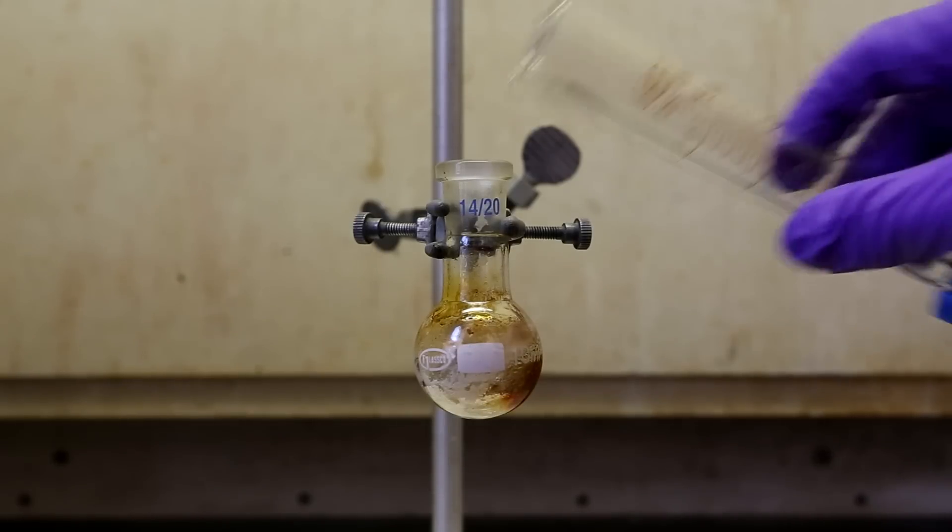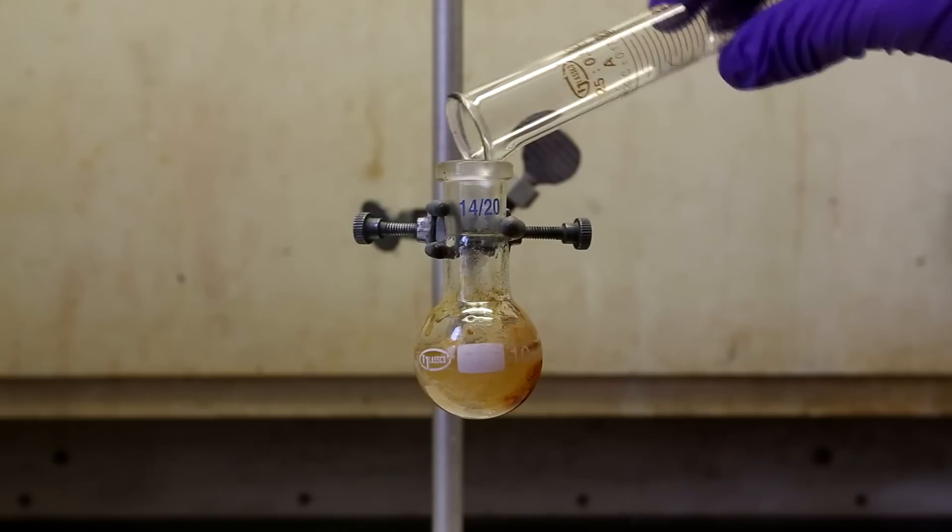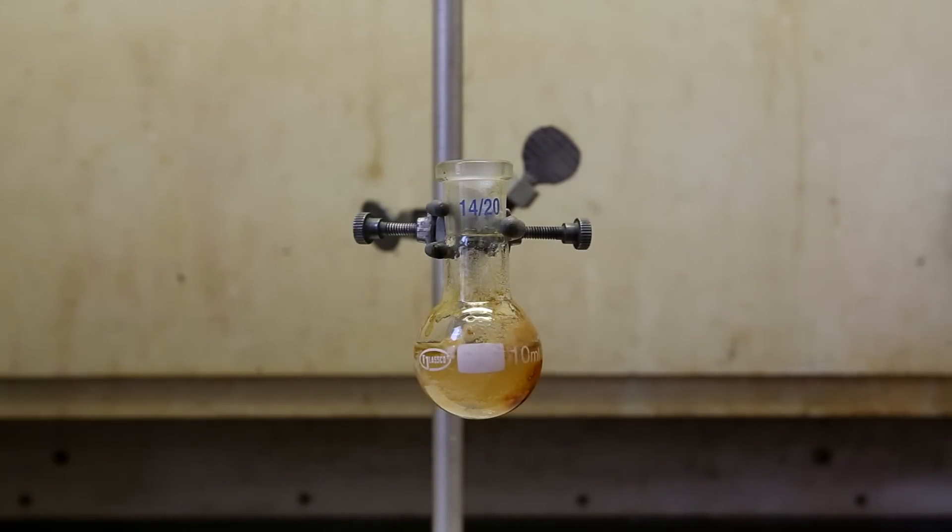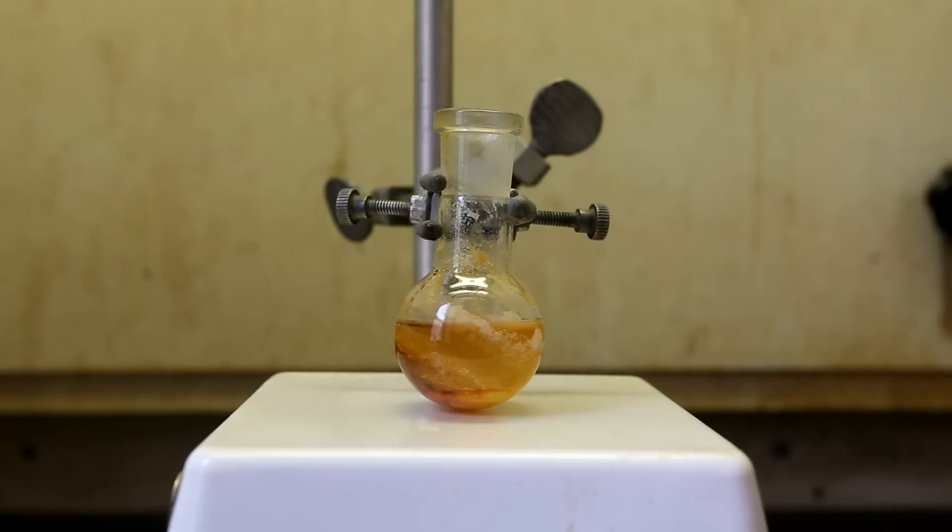After letting the flask cool for a bit, I added 10 milliliters of anhydrous ethanol. 10 milliliters was likely overkill and you could probably get away with much less, around 3 milliliters or something. I added a mini stir bar and I let the ethanol stir for about 20 minutes.